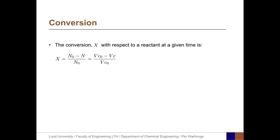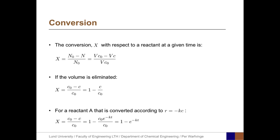When we define conversion, we must define it in terms of molar amounts in the reactor. The conversion is the fraction (N_0 minus N) divided by N_0, and in process properties that is (V·C_0 minus V·C) divided by V·C_0. Eliminating the volume gives X equals 1 minus C divided by C_0. For a reactant A converted according to the reaction with rate R equals K times C, X equals 1 minus e to the negative K·t. From that expression, we can see that when t approaches infinity, the conversion approaches 1.